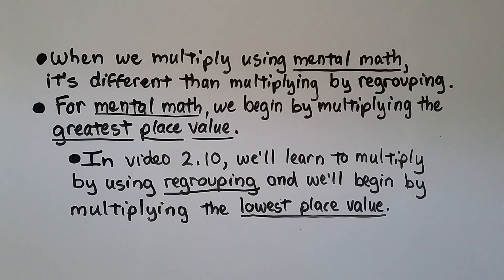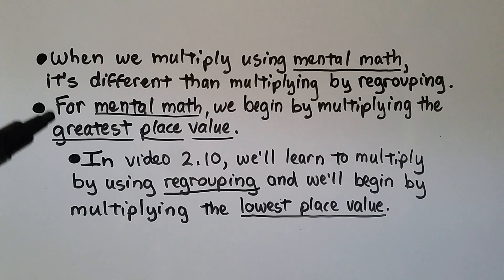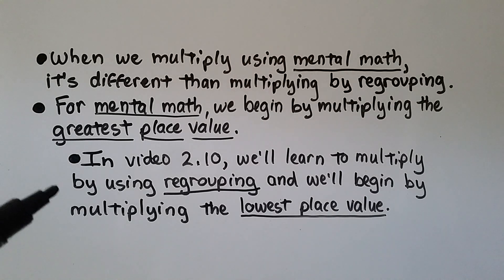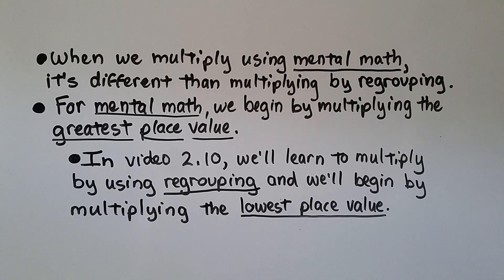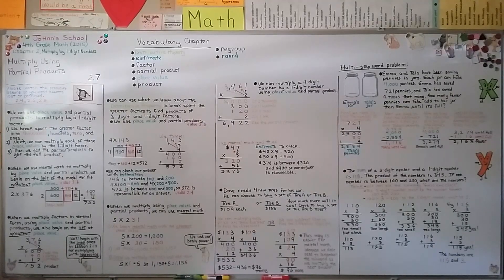When we multiply using mental math, it's different from multiplying by regrouping. For mental math, we begin by multiplying the greatest place value. In video 2.10, we'll learn to multiply using regrouping, beginning with the lowest place value — two different strategies. In our next lesson, 2.8, we'll do more mental math multiplication and see how the commutative and associative properties can help. Have a wonderful day, and I'll see you next time!